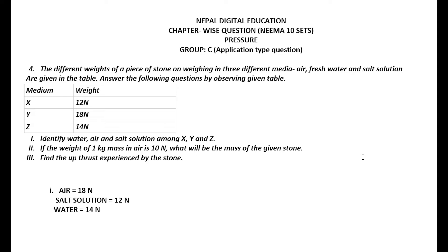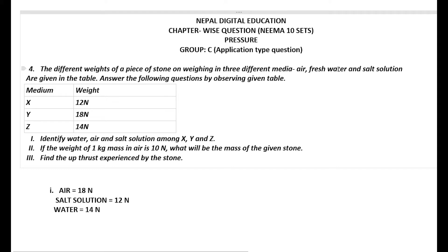Let us look at problem number 4. The different weights of a piece of stone weighed in three different media — air, fresh water, and salt solution — are given in a table. We have three different media X, Y, Z: X weighs 12 newton, Y weighs 18 newton, and Z weighs 14 newton. We have to identify which of X, Y, Z is water, air, and salt solution.